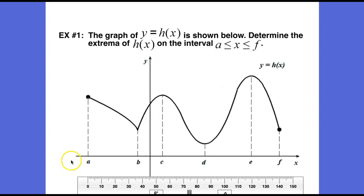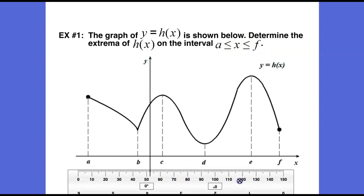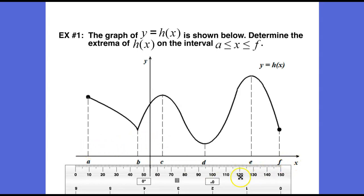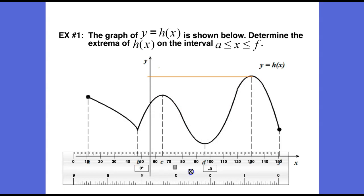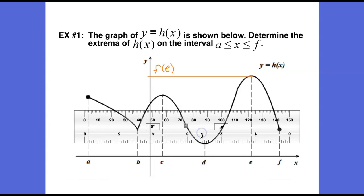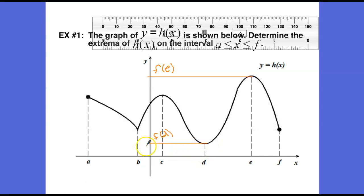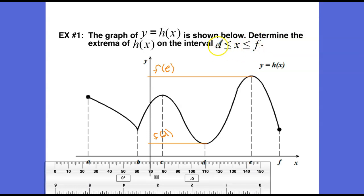In the example, when we're told the graph y equals h of x is shown below, determine the extrema of h of x on the closed interval a less than or equal to x less than or equal to f. On this interval from a to f, the highest possible value — our absolute maximum — might occur at x equals e, and the lowest value — our absolute minimum — would occur at point d. This is a closed interval, so the endpoints are included when looking for absolute max and mins.